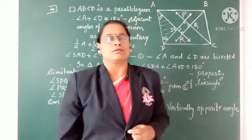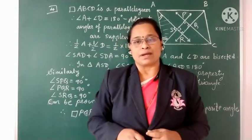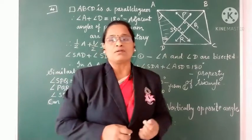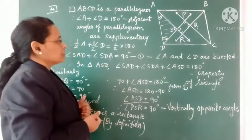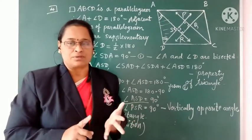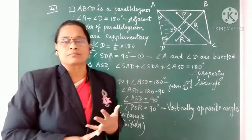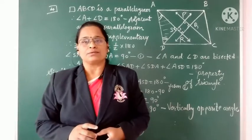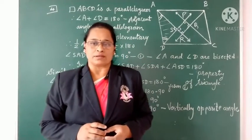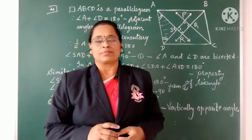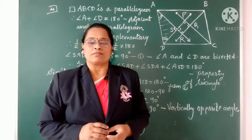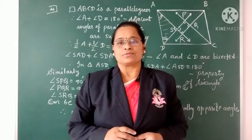Once we prove that all four angles of quadrilateral PQRS are each 90° — that is, all four angles are right angles — we can say by definition that quadrilateral PQRS is a rectangle. In this way, we can make use of properties and tests of parallelogram to solve examples. Today we solved four examples from Practice Set 5.2, revising the tests for parallelogram and how to apply properties of parallelograms. Thank you.